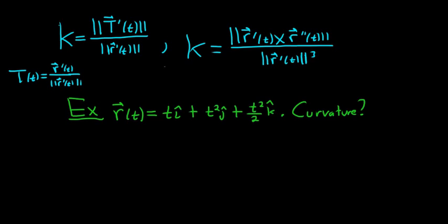So I'm thinking we should use the second one because when we differentiate this, let me show you what I mean. So let's say you take the first derivative, so that's going to be 1i + 2tj + tk.